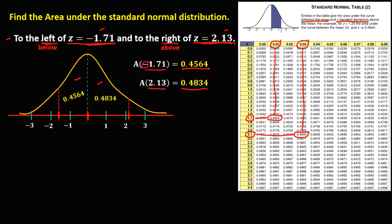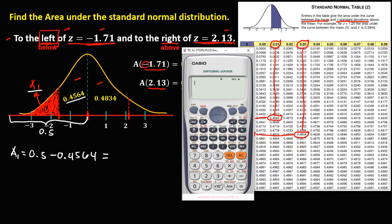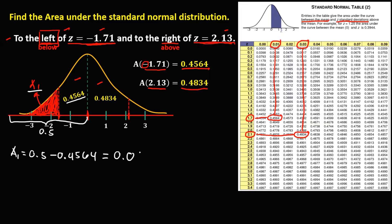Since on this problem we're looking for the area to the left or below Z equals negative 1.71, this is the shaded region — the area we need to find. We call this Area 1. Since it's to the left, that's 0.5 because half of the curve has area 0.5. Since the middle area is not part of the shaded region, we subtract 0.4564. So Area 1 equals 0.5 minus 0.4564, which equals 0.0436.